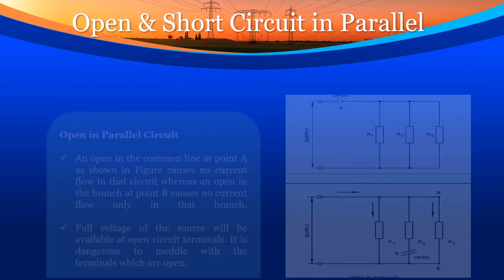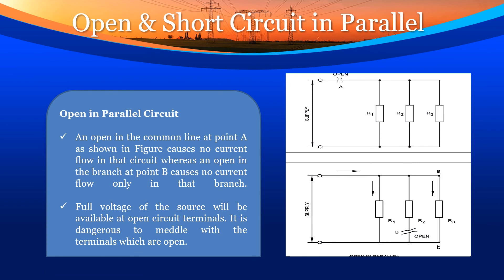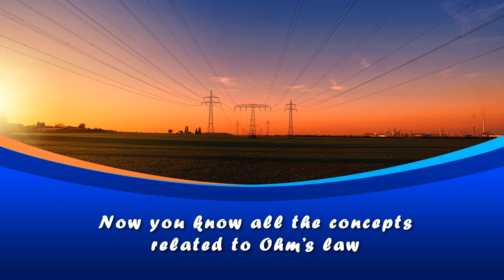Open in parallel circuit: an open in a common line at point A causes no current flow in that circuit, whereas an open in a branch at point B causes no current flow only in that branch. The full voltage of the source will be available at the open circuit terminals — it is dangerous to meddle with terminals which are open. Now you all know the concepts relating to Ohm's law.